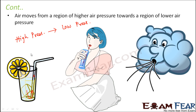From this you understand that air moves only when there is a difference in pressure — from a region of high pressure towards a region of low pressure. This moving air is called wind. As wind moves, it exerts pressure on other objects and makes them move along with it. When we ride a bicycle in the direction of wind, we get an additional force and support, so we can ride with minimum effort.